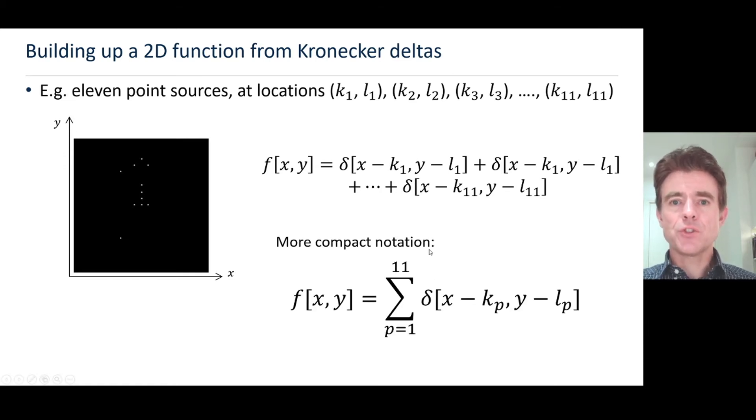The compact mathematical notation we use is to just say it's the summation over all the point source positions, all the point sources p which have coordinates kp for x and lp for y. We just shift that delta function to those positions, add them all together, gives us the function.